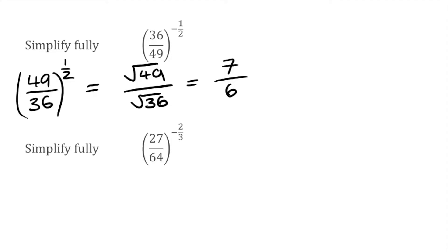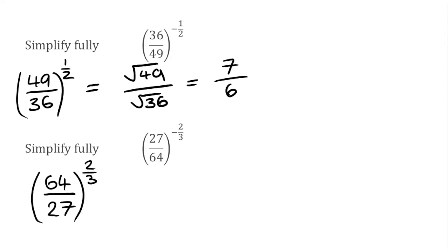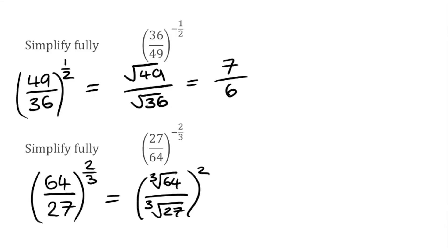For this next question, we've got 27 over 64 to the power of negative 2 over 3. That negative power means we're looking for the reciprocal — because I've got a fraction, all I have to do is flip it. So 27 over 64 to the negative 2 over 3 is exactly the same as 64 over 27 to the power of positive 2 over 3. Applying our fractional index, we find the cube root — because that's on the denominator — and then square it, shown by the numerator. So we write the cube root of 64 over the cube root of 27, which we're then going to square. The cube root of 64 is 4, over the cube root of 27, which is 3, giving us 4 over 3.